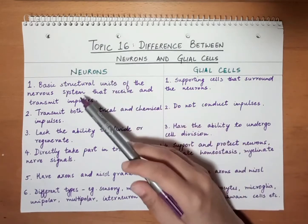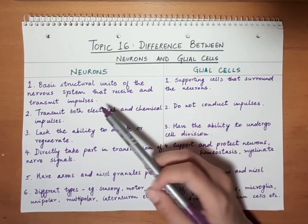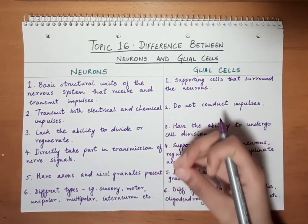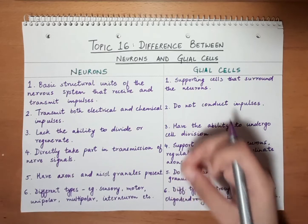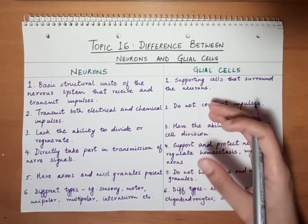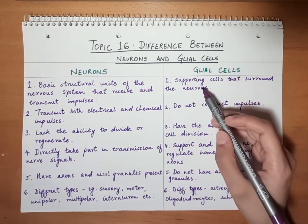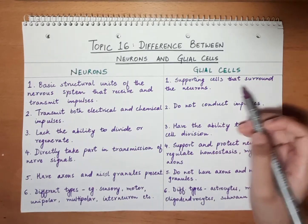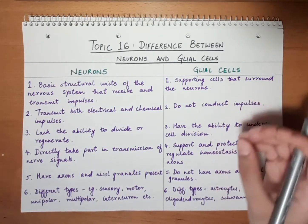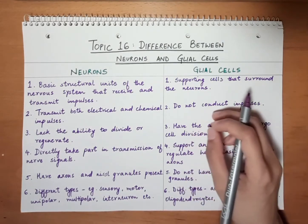Neurons are the basic structural and functional units of the nervous system, and their main function is to receive and transmit impulses. On the other hand, glial cells are the non-neuronal supporting cells of the nervous system which basically surround the neurons.